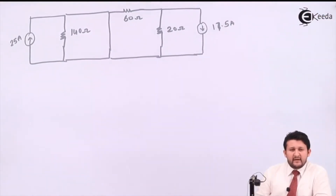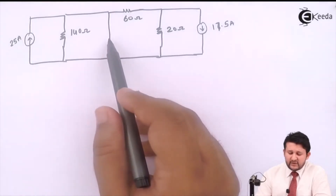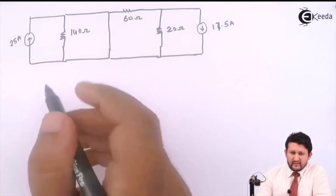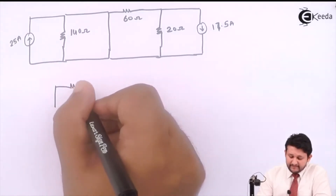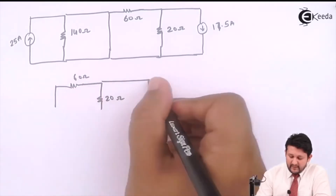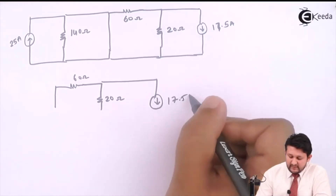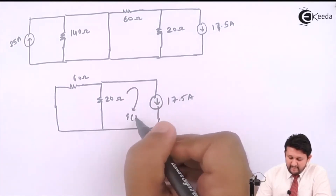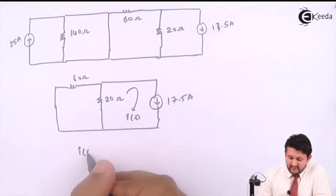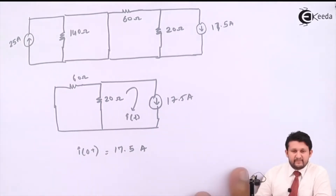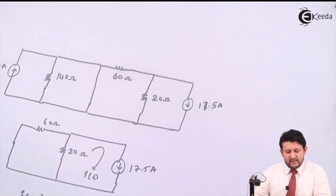Again using the redundant property: when there is a short in parallel with any term, those terms are removed. So both parallel terms are removed, and the circuit simplifies to 60 ohms and 20 ohms with a current source of 17.5 amps. I need to find i(t), and since my i(t) and the current source are in the same direction, i(0⁺) = 17.5 amps.